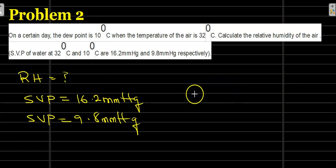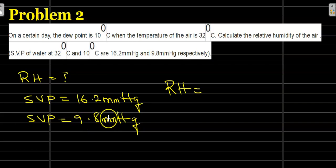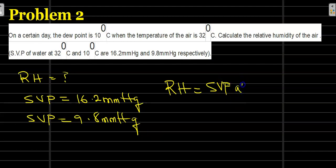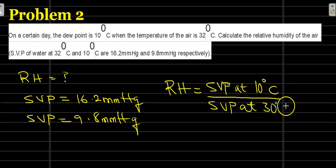Now, when a dew point is given, the formula to use is: the SVP at the dew point temperature divided by the SVP at the actual air temperature, times 100%. Since the dew point is 10 degrees Celsius, we use the SVP at 10°C divided by the SVP at 32°C.